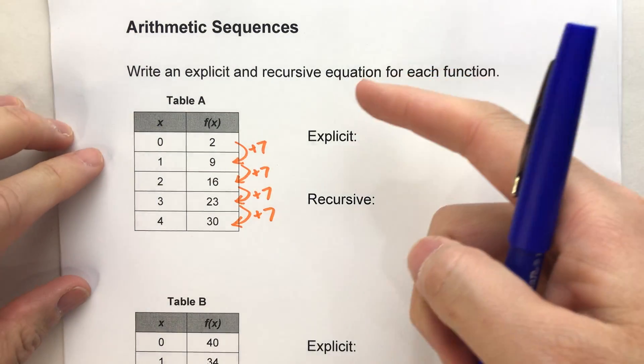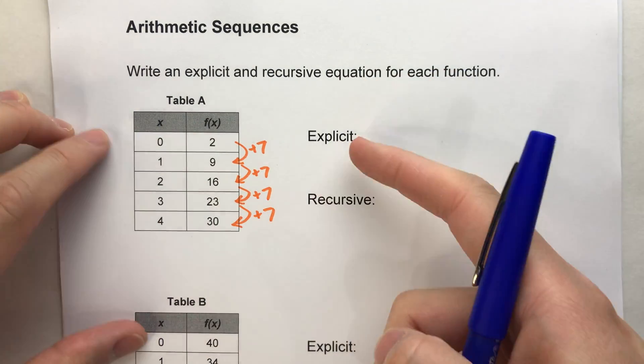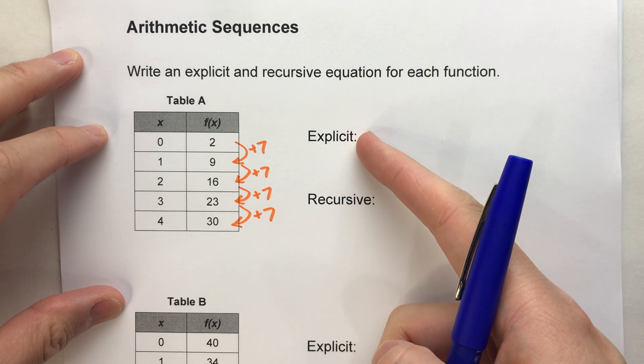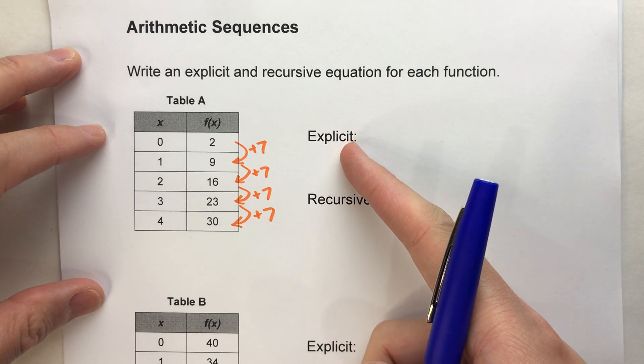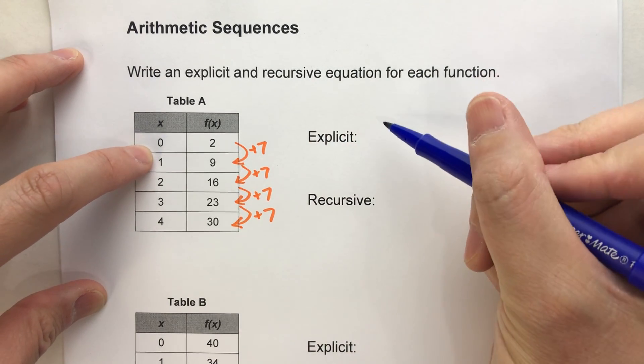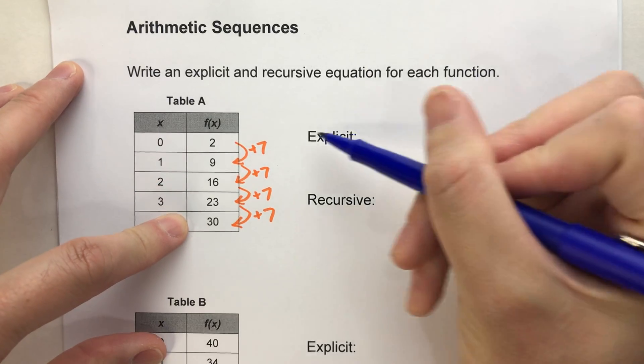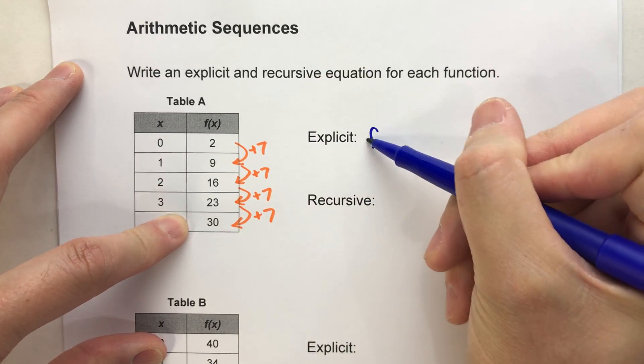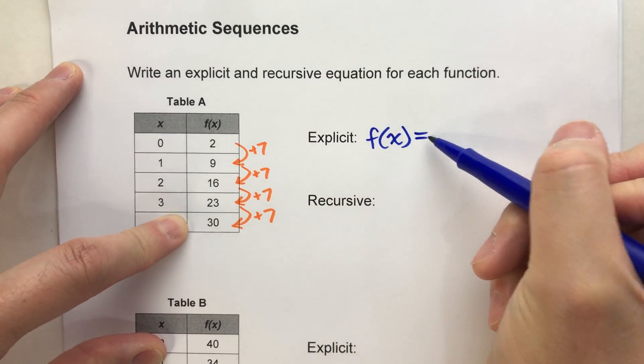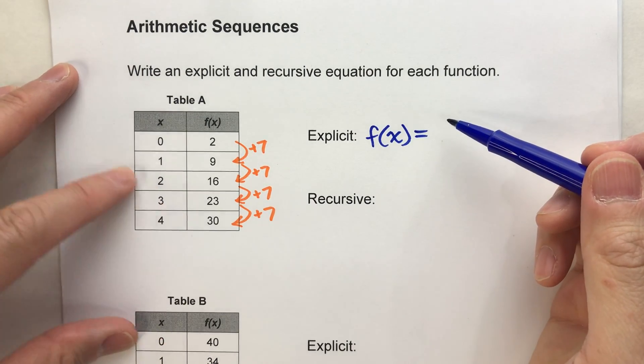Now we can write an equation for this pattern in two different ways. One of them is an explicit equation. Now for an explicit equation, since we're trying to calculate f of x, we'll start with f of x equals, and there's two things we need to know.